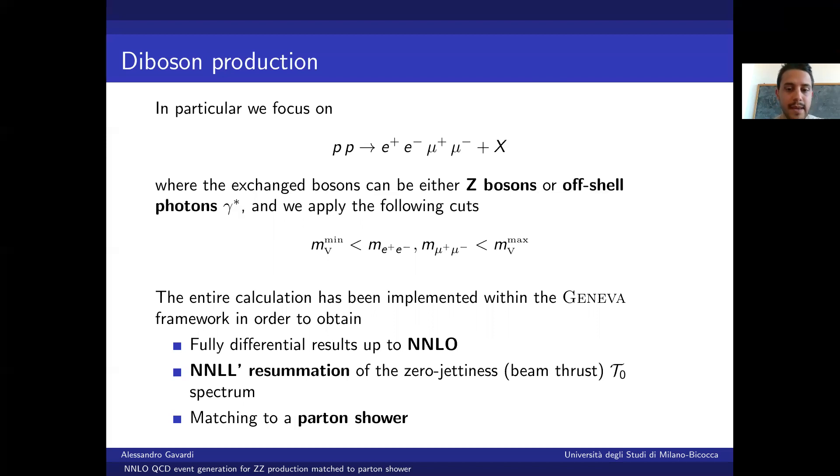The entire calculation has been implemented within the Geneva framework in order to obtain fully differential results up to next-to-next-to-leading order and NNLL prime resummation of the zero-jettiness tau0 spectrum. We will see in the next few slides what zero-jettiness is. In the end, we will also be able to match our generated events to a parton shower.